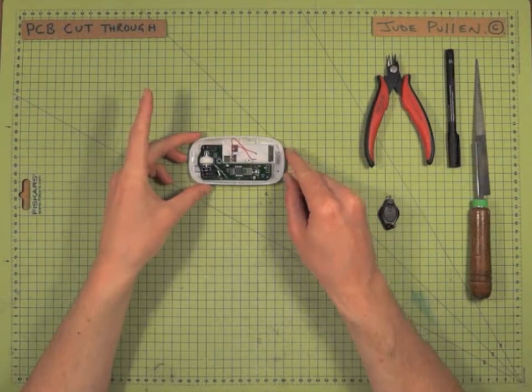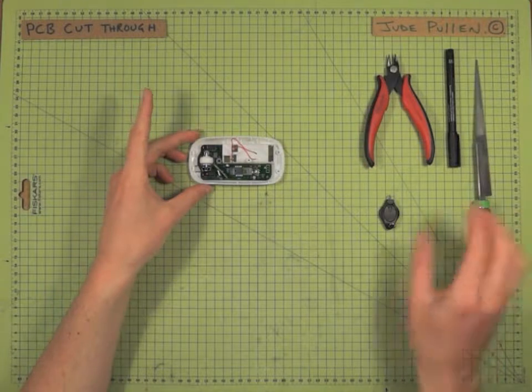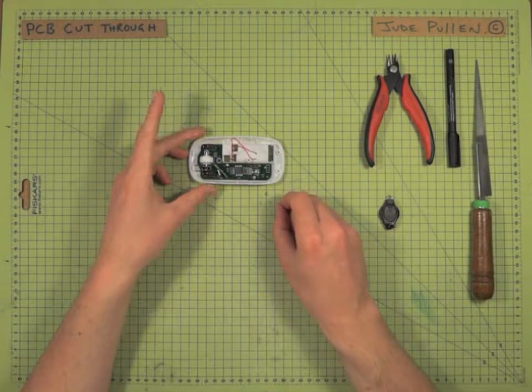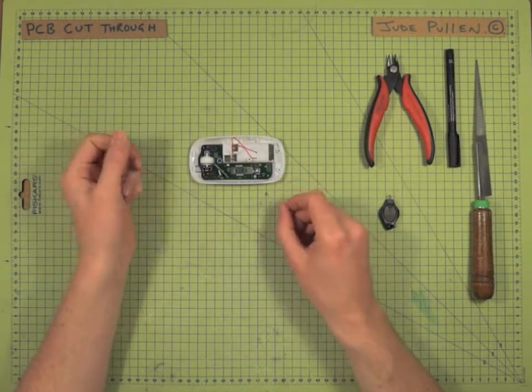The PCB cut through we're going to be doing using a zoner saw, but you can always use a hacksaw blade and work through it slowly, or alternatively something like a rotary tool like a Dremel or Proxxon.